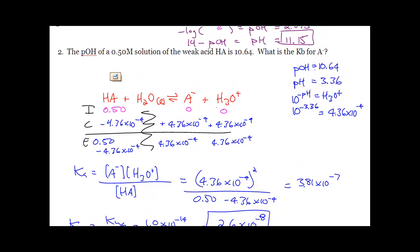For the next problem, you're given that the pOH is 10.64 — that's like your X — and the initial concentration is a 0.50 molar solution. It's telling you that it's a weak acid, so I'm giving you the pOH of a weak acid, and you need to calculate the KB. This isn't actually a KB weak base question — you're starting with a weak acid, so this is a Ka question that you then convert to a KB at the end.